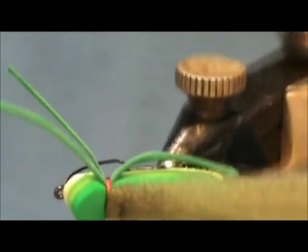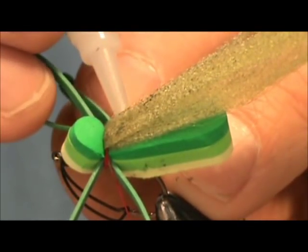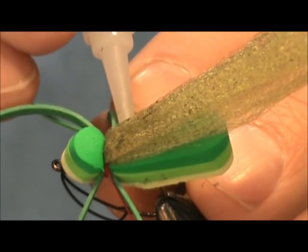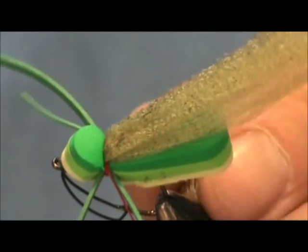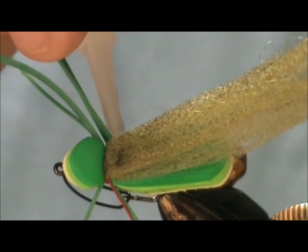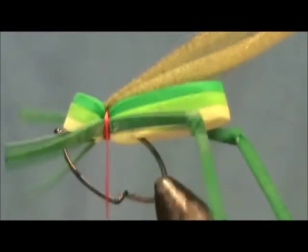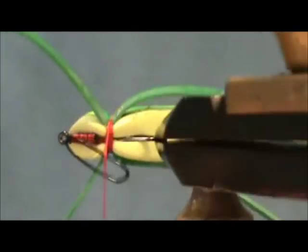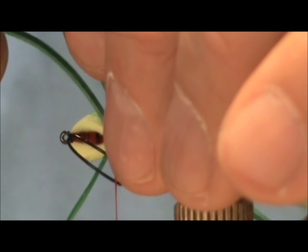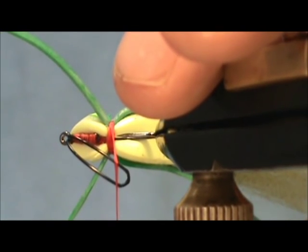Now the legs are splayed out there pretty good so I'm going to put a little drop of super glue on the inside. I'm going to glue that leg down to the side. Turn it back over this way and glue that leg down to the side.